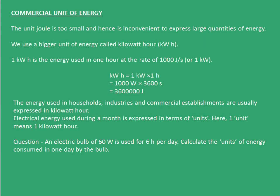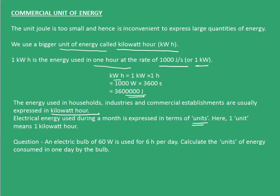Now, we move on to the last topic of this chapter: the commercial unit of energy. The unit joule is too small and hence inconvenient to express large quantities of energy. We use a bigger unit called the kilowatt hour. 1 kilowatt hour is the energy used in 1 hour at a rate of 1000 joules per second, or 1 kilowatt. So 1 kilowatt hour is 3,600,000 joules — quite a huge quantity. The energy used in households, industries, and commercial establishments is usually expressed in kilowatt hours. Electrical energy used during a month is expressed in terms of units, where one unit equals 1 kilowatt hour.